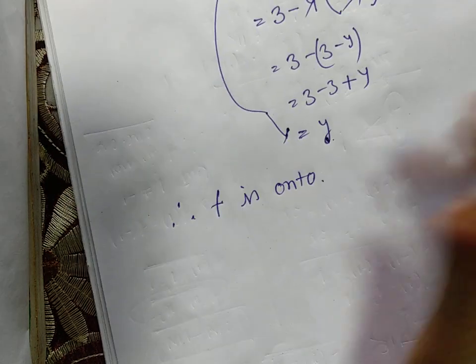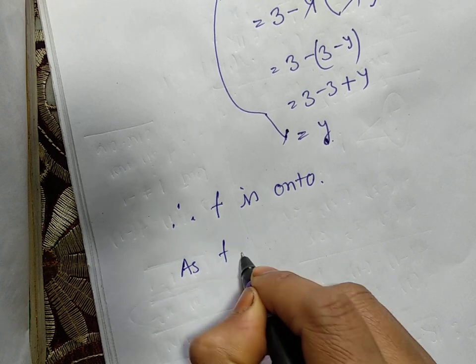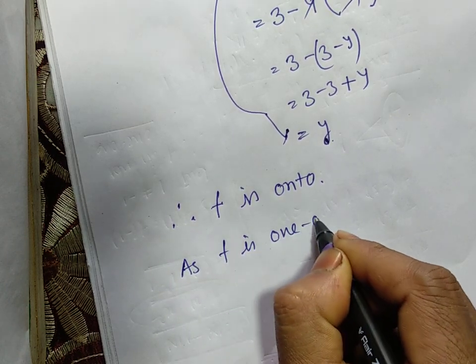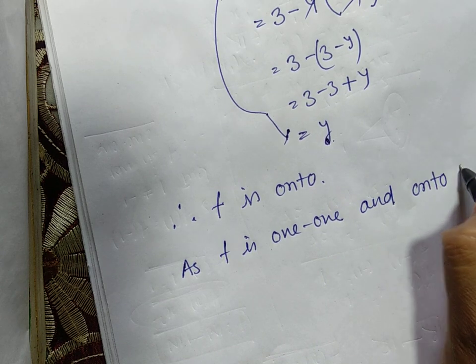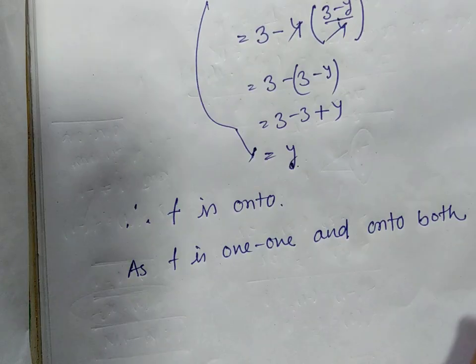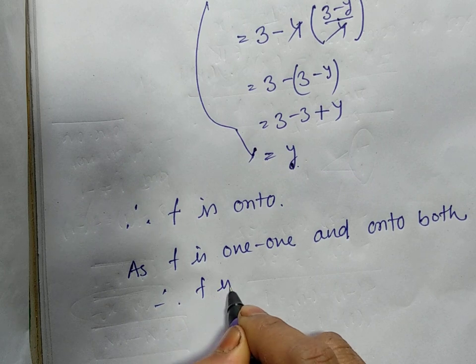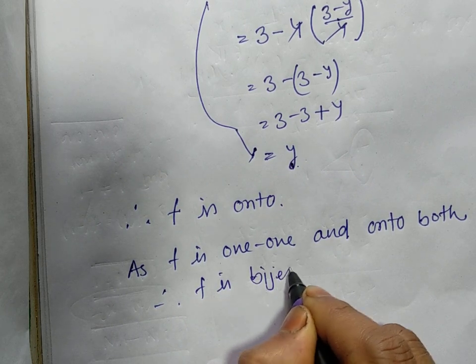As f is one-one and onto both, therefore f is bijective.